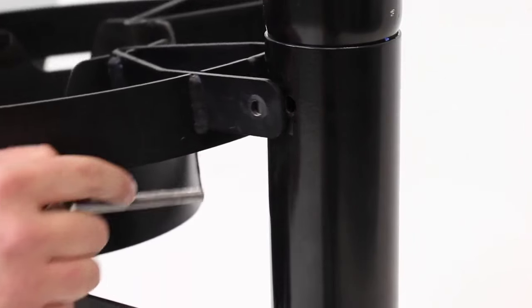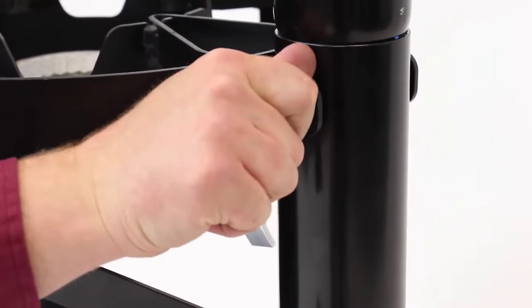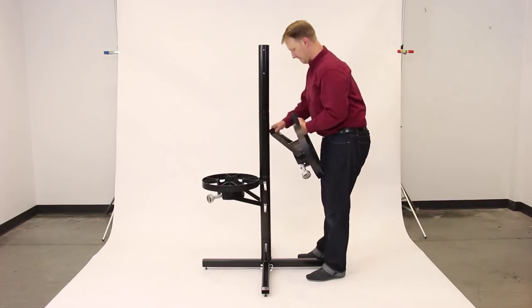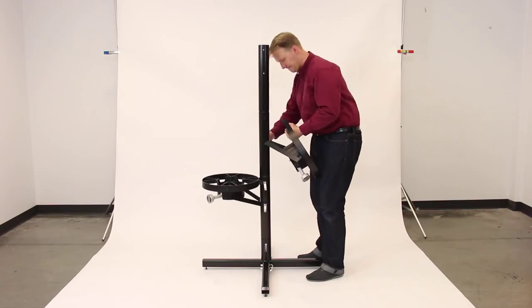Next, line up the mounting bracket holes with the next two holes further up on the main support and install a second quick clamp. Now, on the opposite side of the main support, attach the middle, left oriented burner using the same technique.